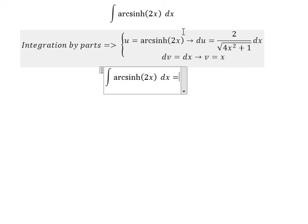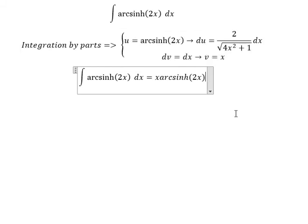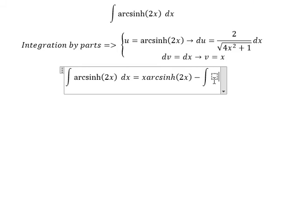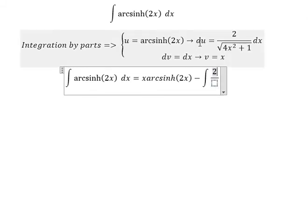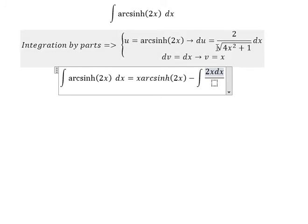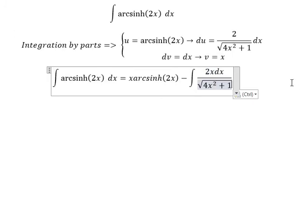So we have u multiplied by v, and then negative the integral. We have x·arcsinh(2x) minus the integral of 2x dx over the square root of 4x² + 1. Now we need to consider this integral.